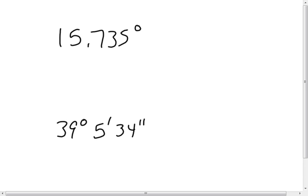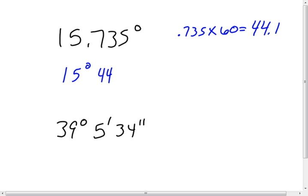We want to look at converting an angular measurement — 15.735 — into degrees, minutes, and seconds. To do that, take the 15 and write it as the degrees; that's not going to change. Take the remainder, 0.735, and multiply it by 60, which gives us the number of minutes — in this case 44.1. We only use the number before the decimal, so 44 minutes. Then take the remainder, 0.1, and multiply by 60 to get the seconds — in this case 6. So: 15 degrees, 44 minutes, and 6 seconds.